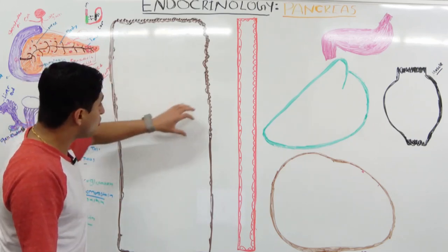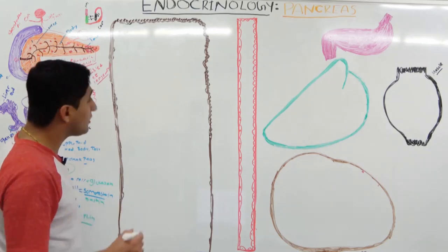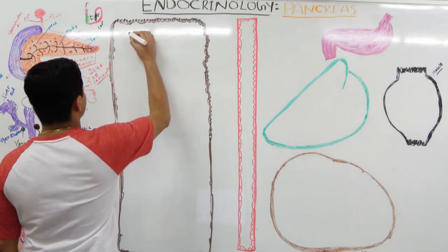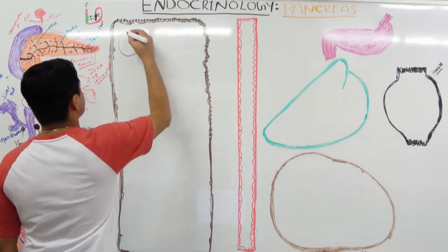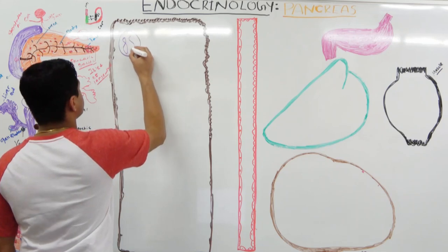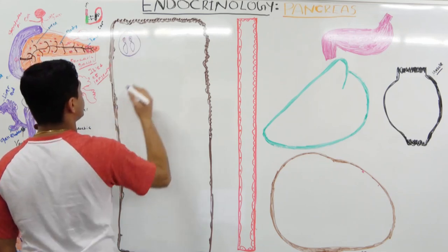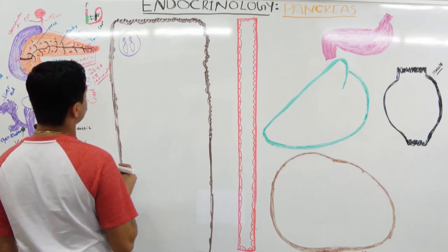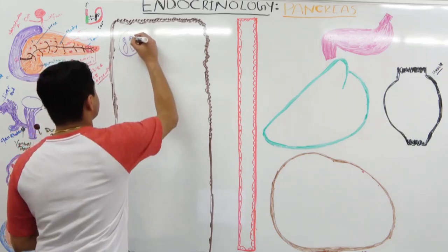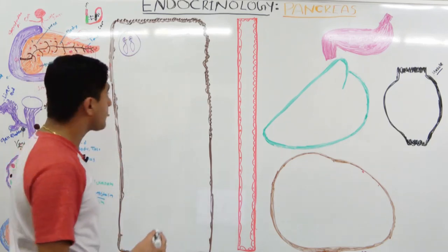The biosynthesis of insulin begins at the DNA level. In the nucleus, there is chromosome number 11. At the short arm of chromosome number 11, there are special genes responsible for making insulin.